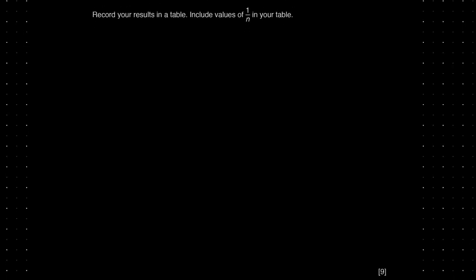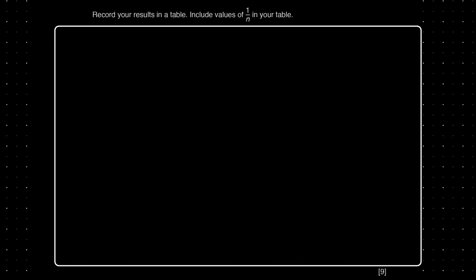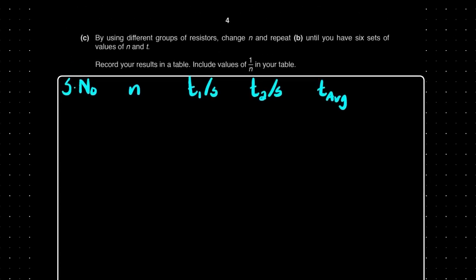N is your independent variable because that's what you change yourself. For the table, I always include: serial number, N (number of resistors), T1 in seconds, T2 in seconds, T average in seconds, and 1/N. I personally always prefer slashes rather than brackets for column headings — that is the technically more correct way, since when you use a slash the unit itself can have brackets without confusion.